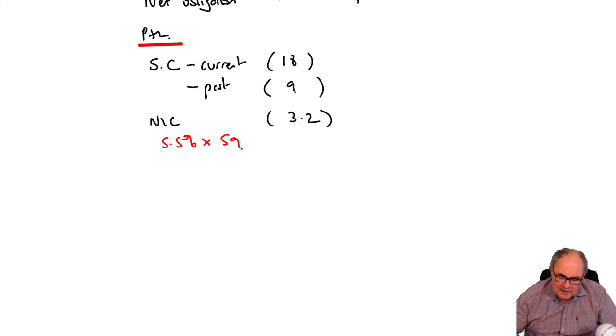Finally, in OCI you've got the remeasurement difference. Sometimes people call it actuarial difference, and that would need a working.